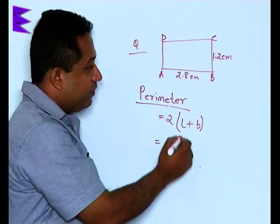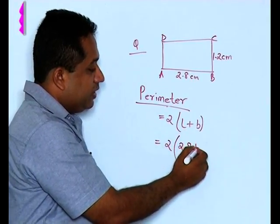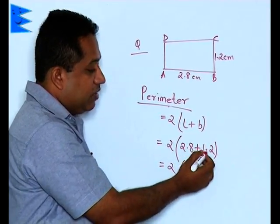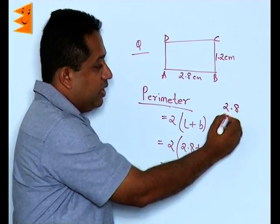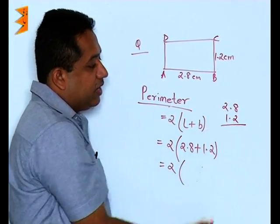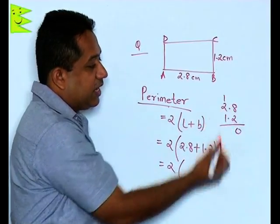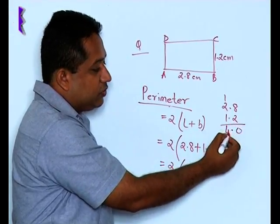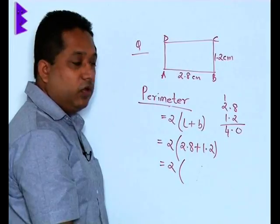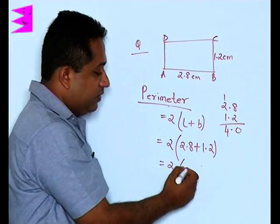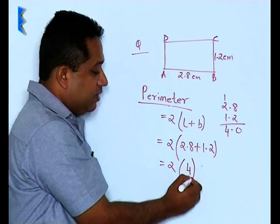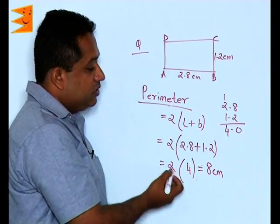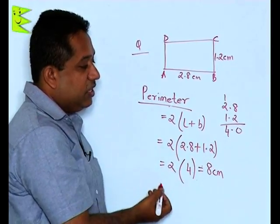The length is 2.8 and the breadth is 1.2. Adding 2.8 and 1.2: 8 plus 2 is 10, write 0 and carry 1; 2 plus 1 is 3, plus 1 carried is 4. Placing the decimal, we get 4.0, or simply 4. Then 2 multiplied by 4 gives 8 centimeters. This is how we add two decimal numbers.